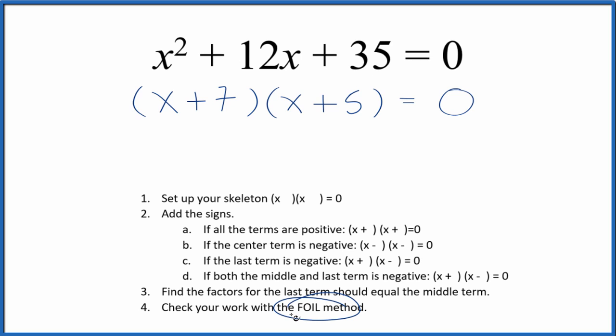But we should check our work with the FOIL method. What we do is multiply the first, the outside, the inside, and then the last terms.